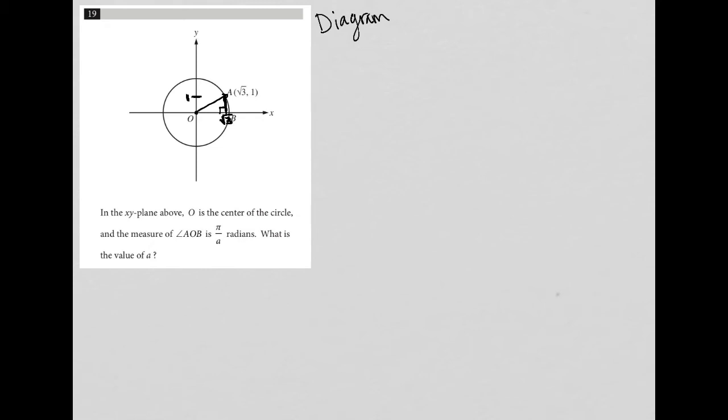Let's actually read the question. The question says, in the xy-plane above, O is the center of the circle, and the measure of angle AOB is pi over A radians. I don't have a lot of space to draw that in, so I'm going to come back over here.